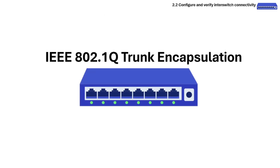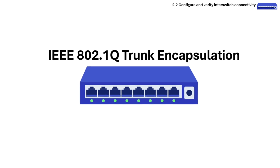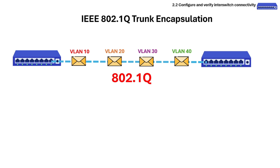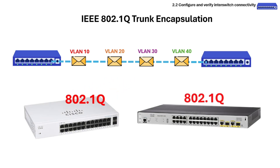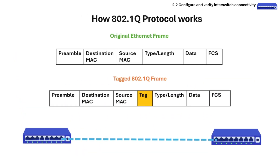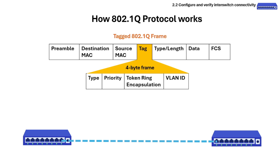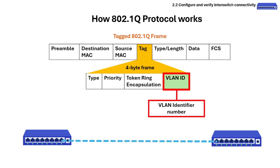The next topic is 802.1Q trunk encapsulation. 802.1Q is the open standard VLAN tagging protocol that lets multiple VLANs travel over the same physical link between switches, and is used to manage VLAN information on Ethernet. All modern Cisco routers and switches use 802.1Q as the default trunking protocol to encapsulate and de-encapsulate VLAN information on Ethernet frames. The 802.1Q protocol modifies the original Ethernet frame by inserting a 4-byte field called a tag field into the frame header, with the last 12 bits used for the VLAN identifier.